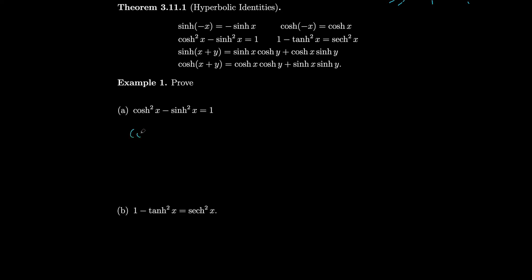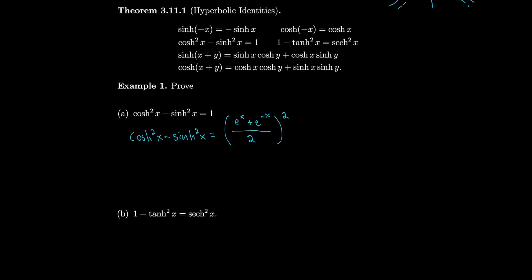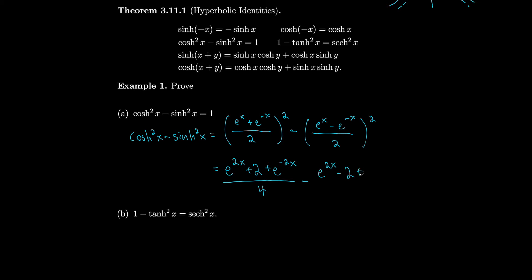Let's prove this one. Let's start with cosh² − sinh². So that equals (e^x + e^(−x)) / 2, squared — because that's exactly what we defined cosh to be — minus what we defined sinh to be, squared. Simplifying, we get (e^(2x) + 2 + e^(−2x)) / 4 minus (e^(2x) − 2 + e^(−2x)) / 4.